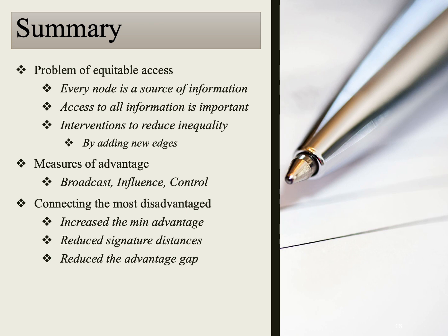In our scenario, each node represents a unique source of information, and it is crucial to ensure access to all this information. To address inequalities in access advantage, we intervened by adding edges to the network. We introduced three measures of advantage — broadcast, influence, and control — and selected broadcast as our optimization objective, aiming to minimize the maximum access gap among all nodes. We demonstrated that our preferred heuristic, BC chord, improved the welfare of the least advantaged individual, reduced the distances between access signatures, and significantly narrowed the gaps in advantage among nodes.